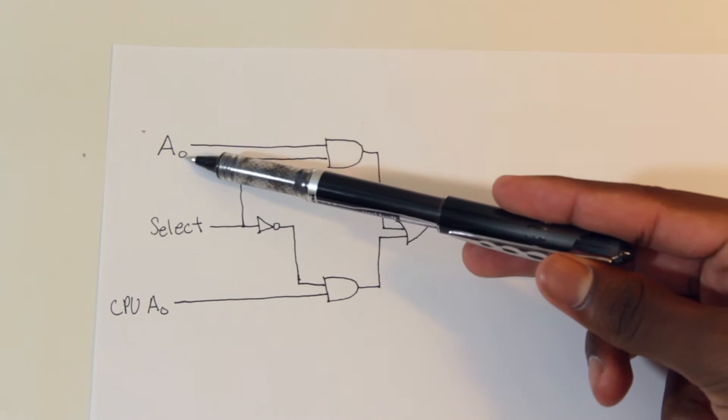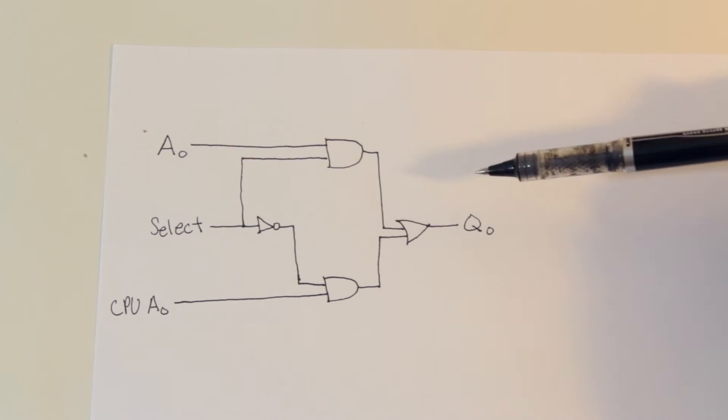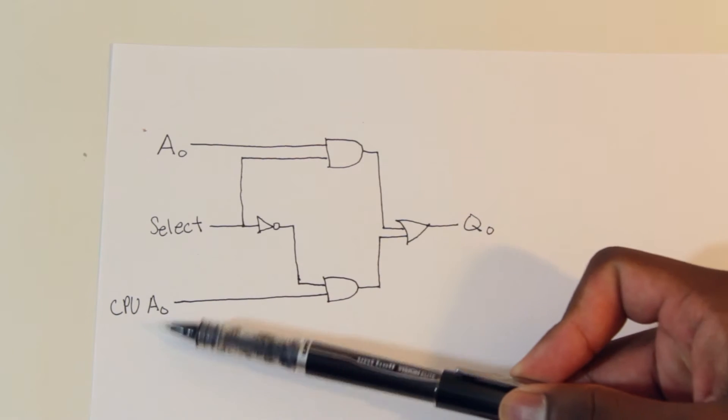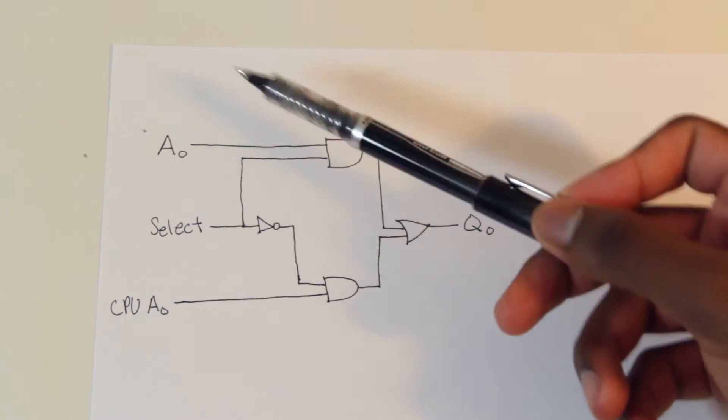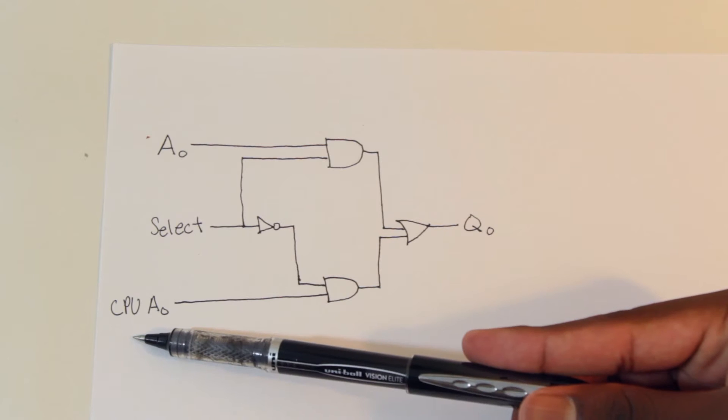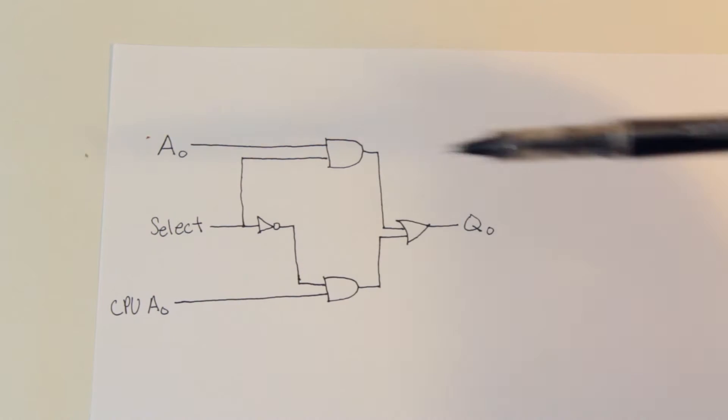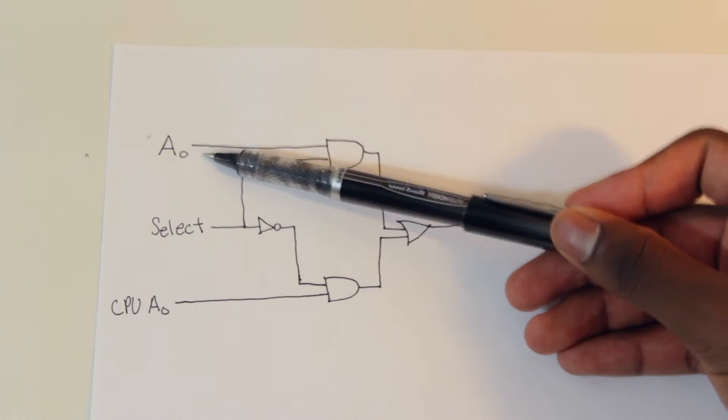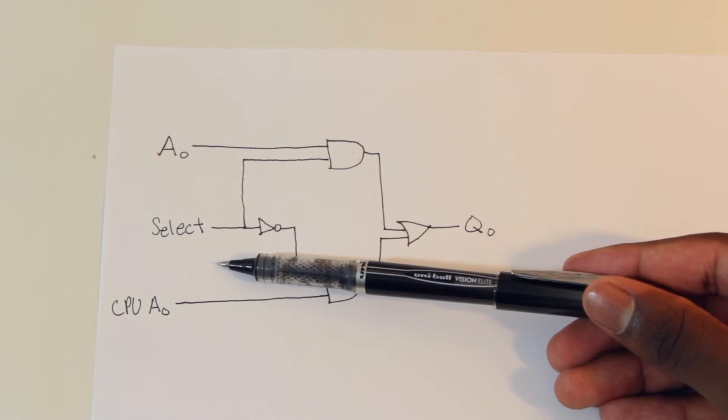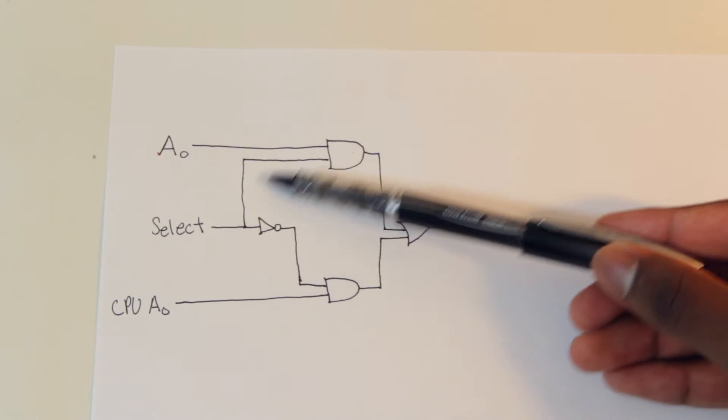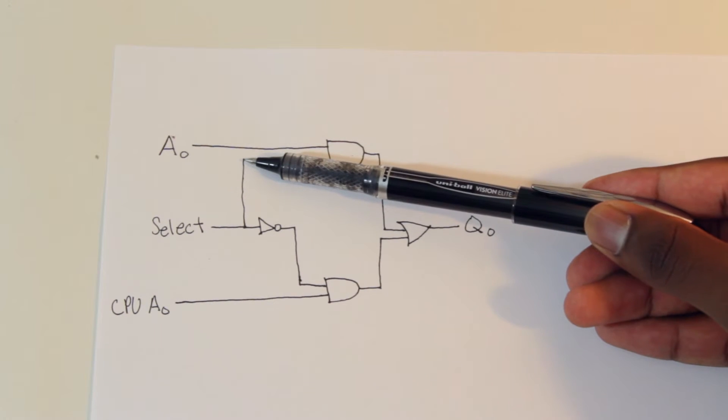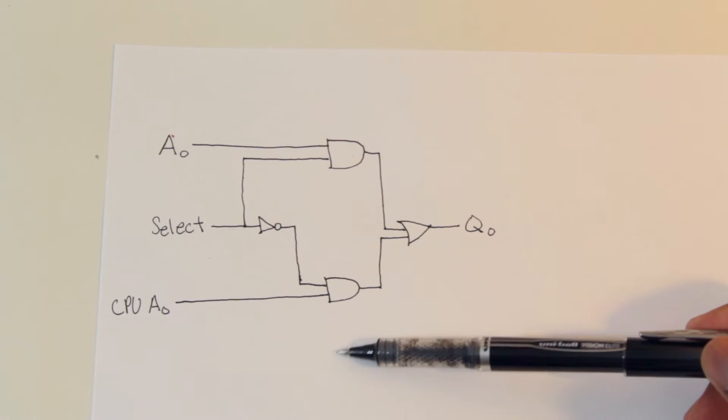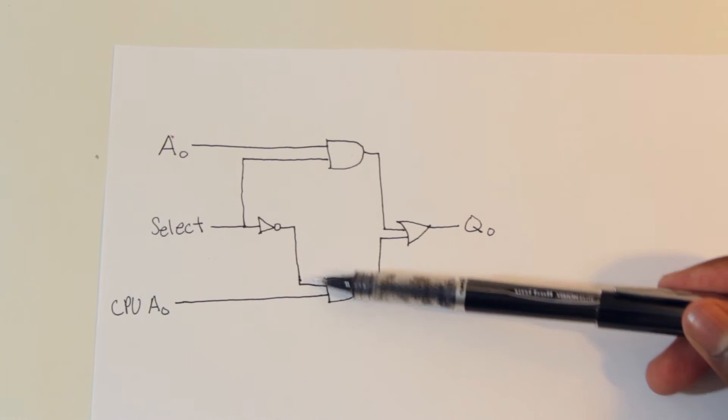You have A0 which is what I'm calling the bit that we input ourselves, the wire that we stick in to either ground or positive. And then we have CPU A0. So A0 stands for address zero, obviously, but CPU's address zero means the address that the CPU puts in itself, so we're not touching anything in that system. So that's right here and that's right here. Now we have the select. And as you can see, the select goes straight into the AND gate with address zero and then goes to a NOT gate and that value goes into this other AND gate with CPU A0. So straight off the bat, because there's a NOT gate right here, you can tell that only one of these AND gates will be true at a time.